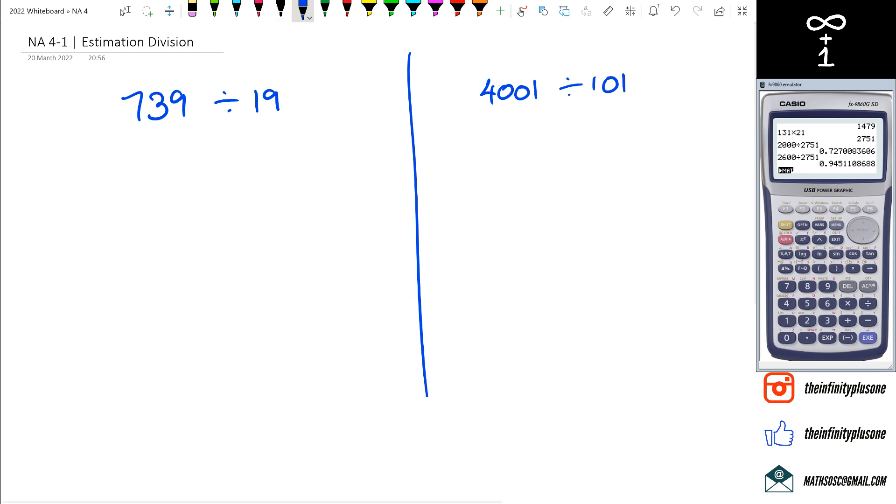So what do we got? We've got 739 divided by 19. The actual answer is around 38.89. So what are we going to do? We're going to go 739, well that's kind of close to 740, and then I've got 19 which is a lot more closer to 20. So I'm going to do 740 divided by 20.